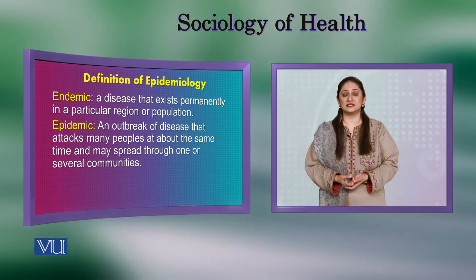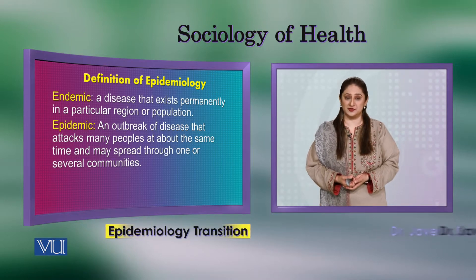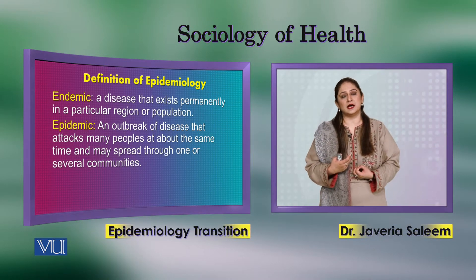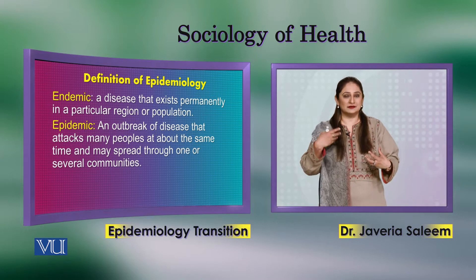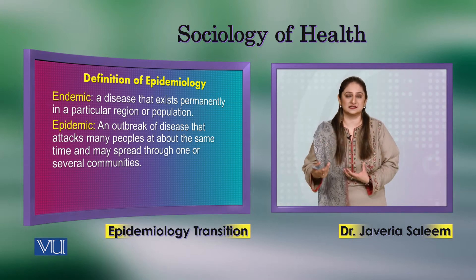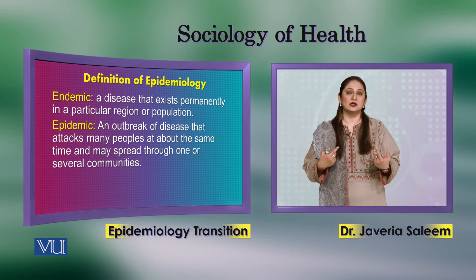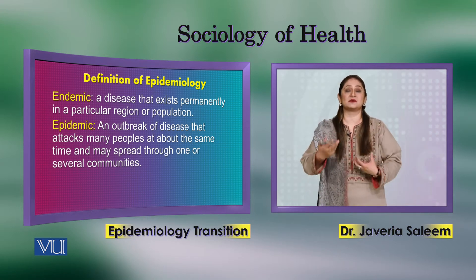What is an epidemic? An epidemic is an outbreak of a disease that attacks many people at about the same time and may spread through one or several communities. For example, if you normally have 4 cases of measles daily but suddenly have 10 cases, the disease frequency has increased — that is an epidemic. Also, if a disease never seen before appears for the first time, even a single case can be called an epidemic.